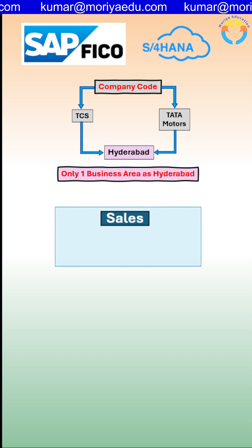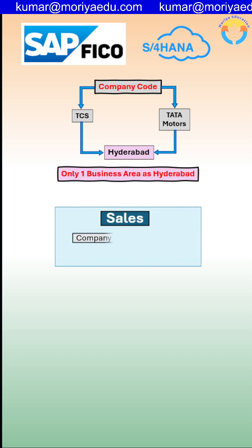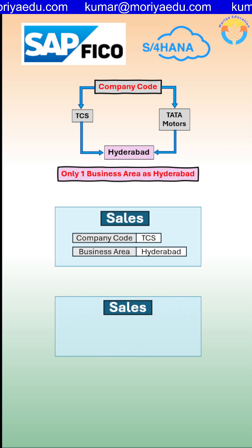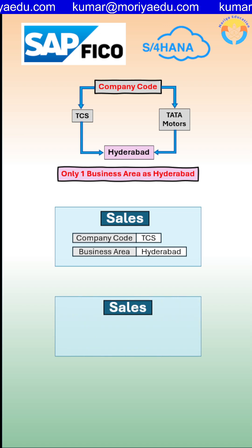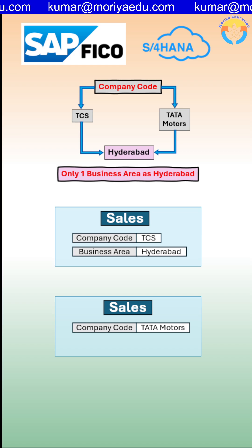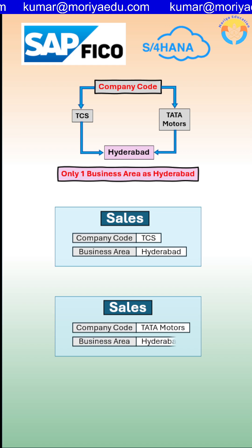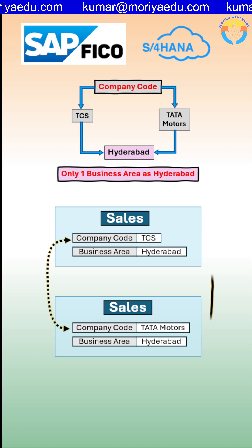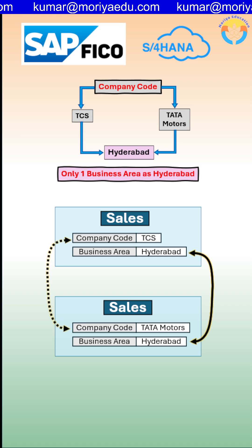So when sales occurs in company code TCS, the business area will be Hyderabad. And again, when sales happens in the company code Tata Motors, the business area will be Hyderabad. So here, only the company code will be changed, but the business area will be the same. This is one type of organizational structure.